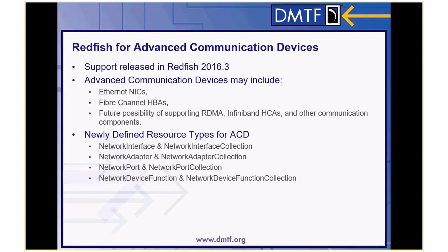Redfish developed an advanced communication device model for the 2016.3 release. It's continually maintained and updated, so it's possible that new features, functions, and bug fixes have been added. The initial support contained modeling for Ethernet NICs and fiber channel HBAs, with the possibility of supporting things like RDMA, InfiniBand, and other communication components in the future. The whole point was to take the Ethernet interface model, which was just a bare-bones LOM kind of NIC in the initial Redfish model, and expand on it for all the other network kinds of things. This isn't necessarily the fabric model, but it could be an association to a fabric endpoint.